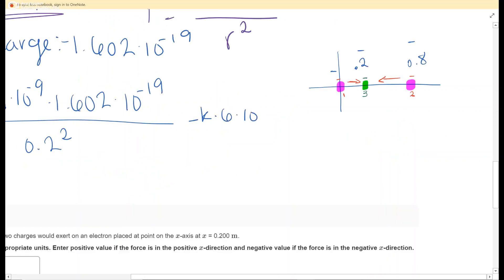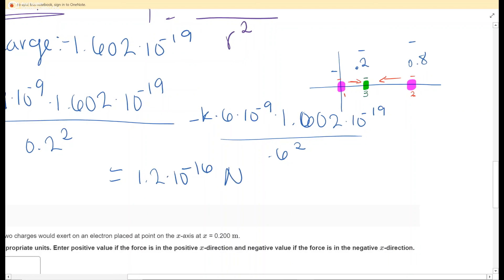Times 6 times 10 to the negative 9th, times your charge of your electron, divided by the distance between those, squared. And when we solve that out, you get 1.2 times 10 to the negative 16th Newtons, because this is a force.